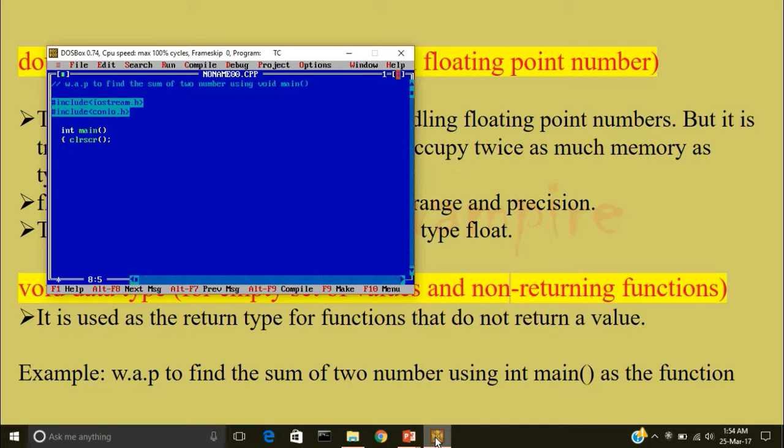Then I will declare variable int a comma b. Cout enter any two numbers less than less than endl which is used to go to a new line. Cin greater than greater than a greater than greater than b. This is known as cascading.